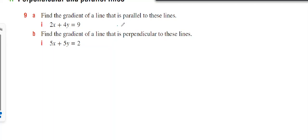Question 9: Find the gradient of the line that's parallel to these. I need to find the gradient, so I'm going to rearrange to get 4y equals minus 2x plus 9. I've moved the 2x to the other side to become negative. Then y equals minus 2x/4 plus 9/4.